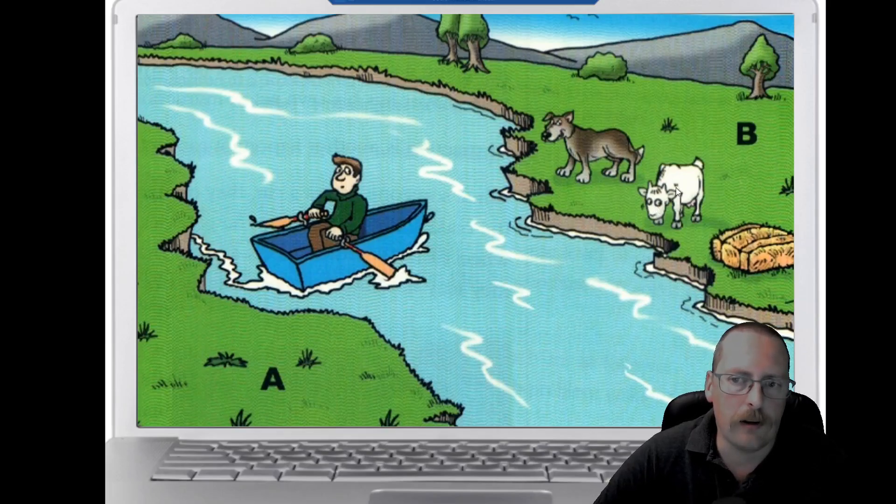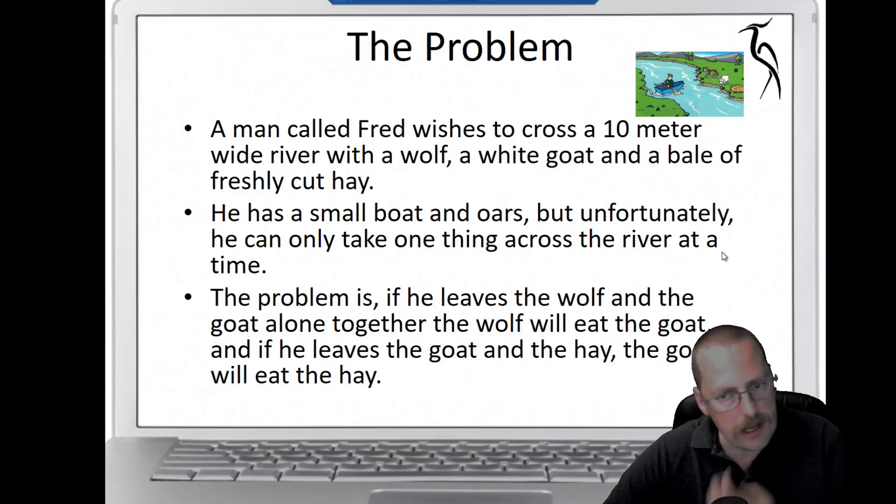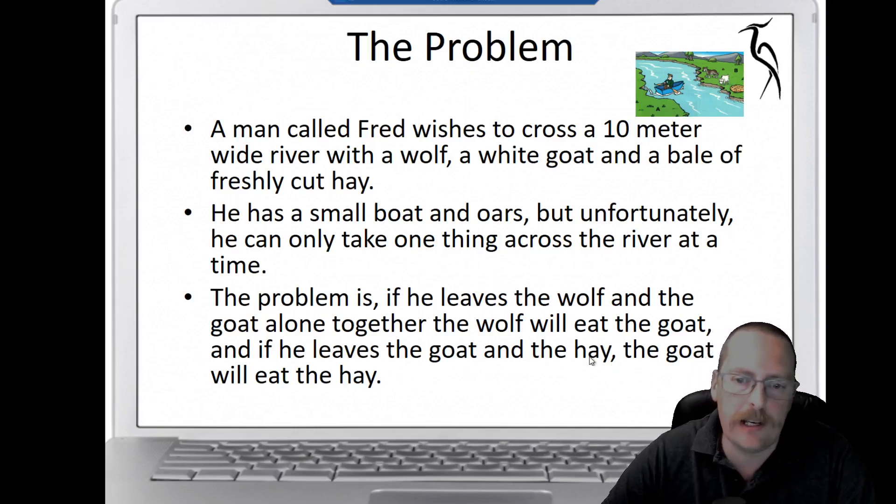The first thing he'd have to do is take the goat over. If he takes a goat from bank B to bank A, he's left the wolf and the hay, which you'll find together. The wolf isn't interested in the hay. So he's taken the goat over. He can leave the goat on bank A and go back for the next item. Here's the problem for you to remember and refer back to if you need to.